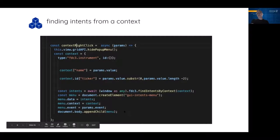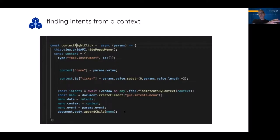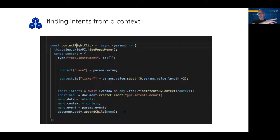Interestingly, one of the things we are doing in FDC3 1.2 is making this kind of workflow even easier to implement for an application. You'll be able to pass just a single API call to the desktop agent — the FDC3 API provider — and then they'll be responsible for drawing that menu for you. In this case, the application itself is drawing the menu.